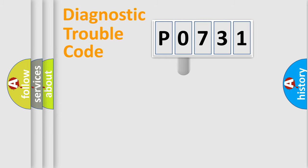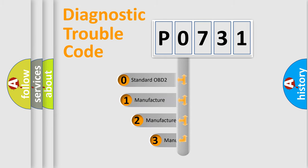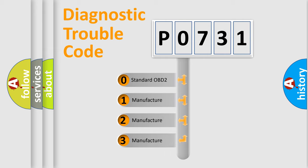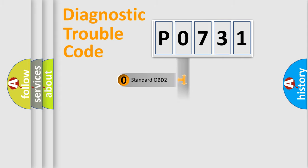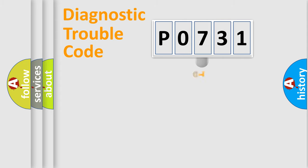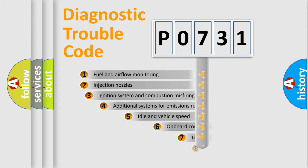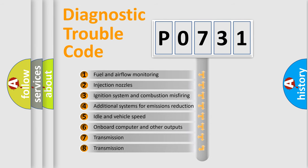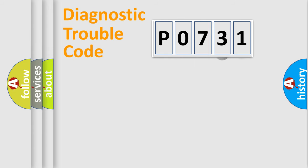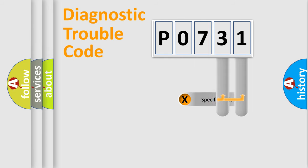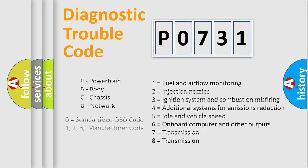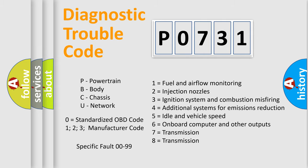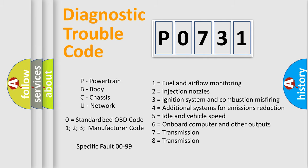This distribution is defined in the first character of the code. If the second character is expressed as zero, it is a standardized error. In the case of numbers 1, 2, or 3, it is a manufacturer-specific error. The third character specifies a subset of errors. The last two characters define the specific fault of the group. This division is valid only when the second character is zero.